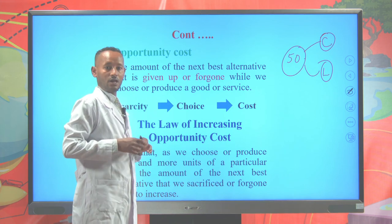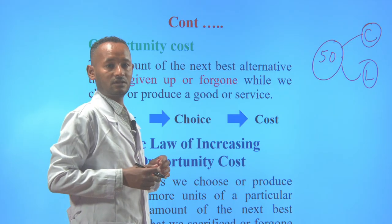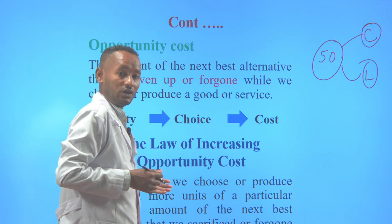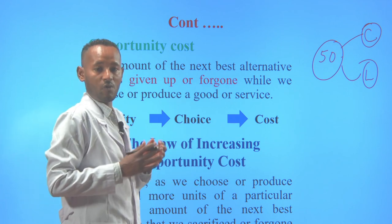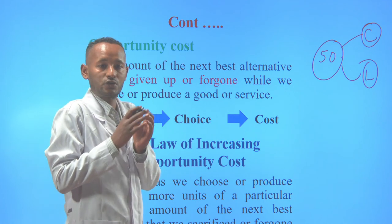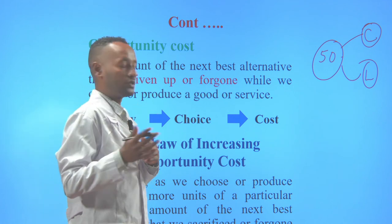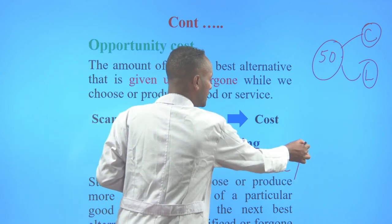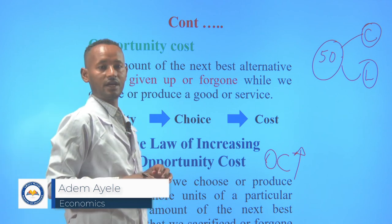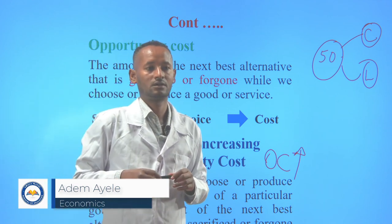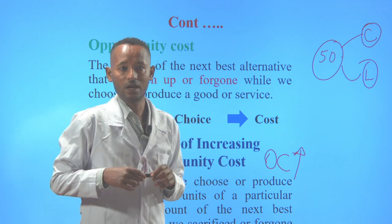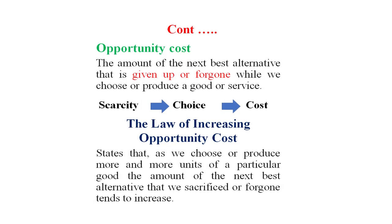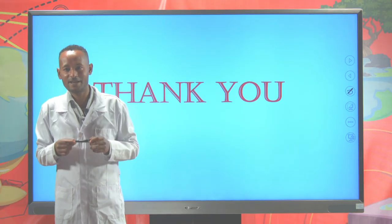The law of increasing opportunity cost states that the amount of the next best alternative given up or foregone while producing or choosing a commodity tends to increase. In short, the opportunity cost of a commodity will always increase. This is all about the first revision lesson in unit one. Stay home, stay safe. Thank you.